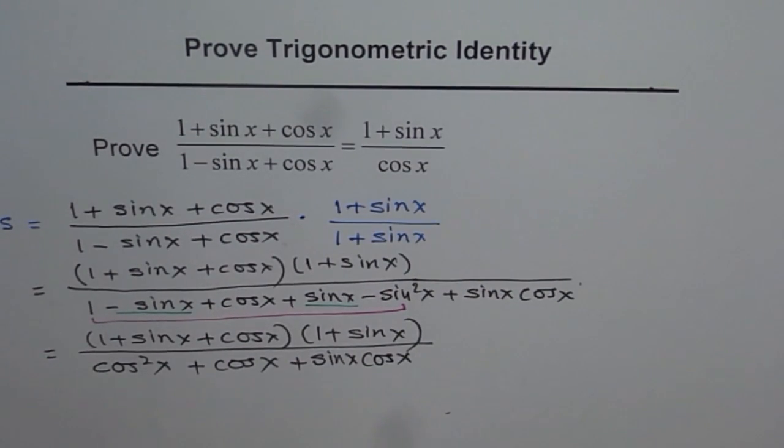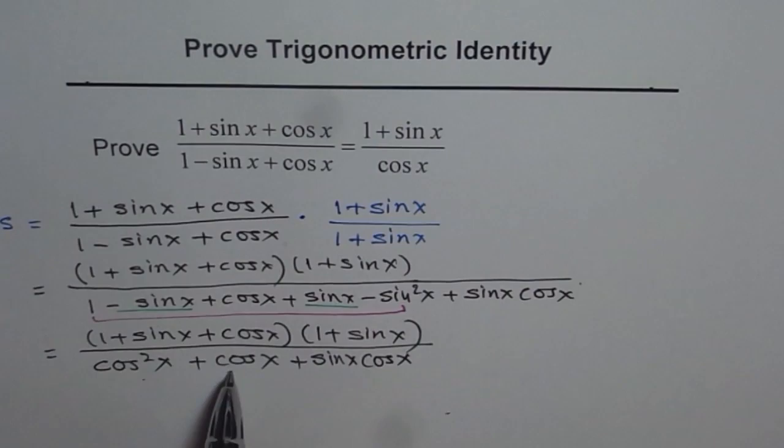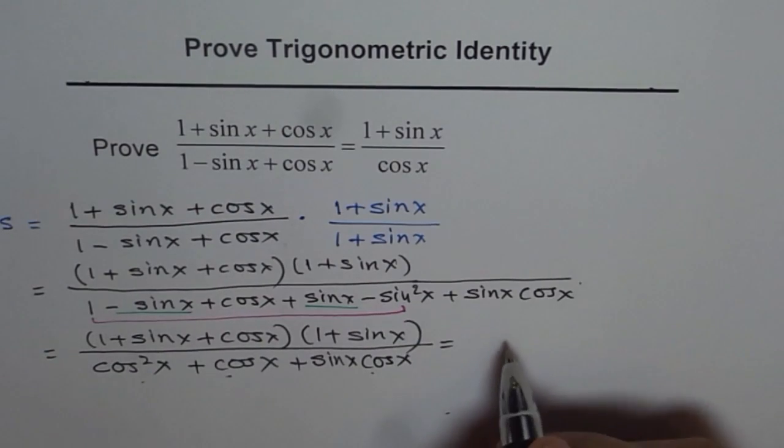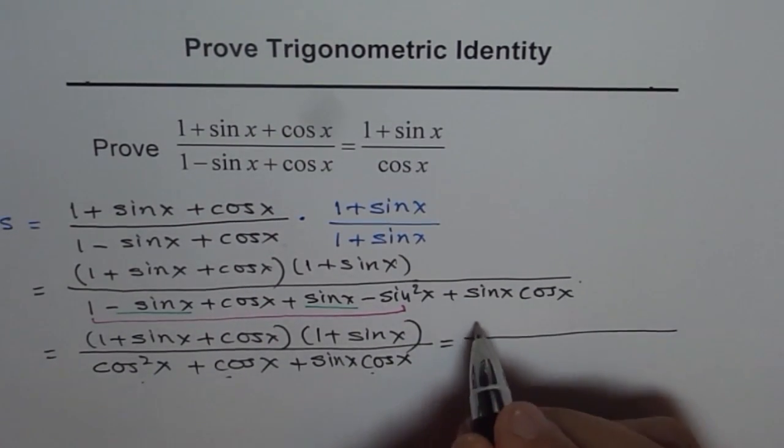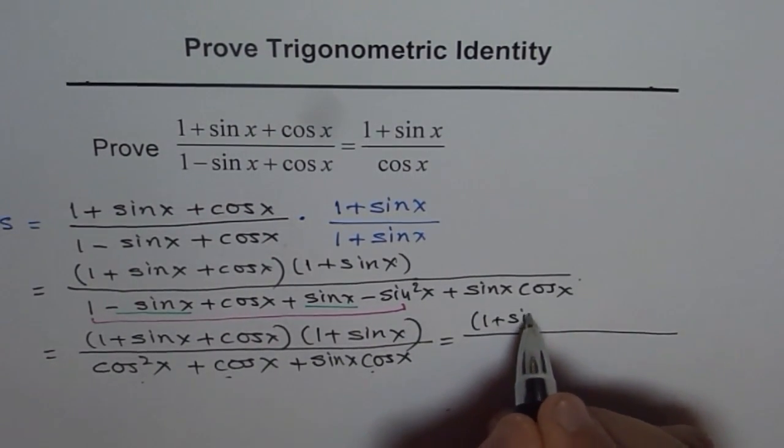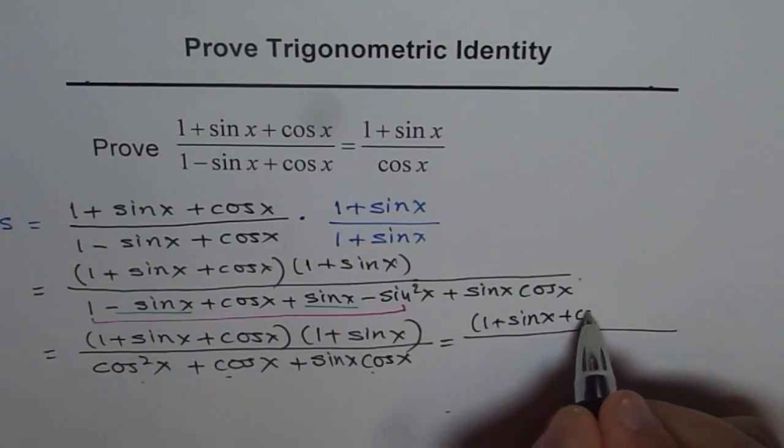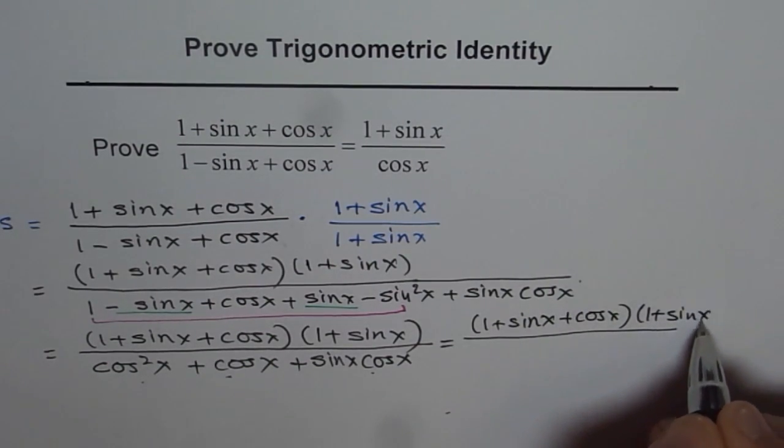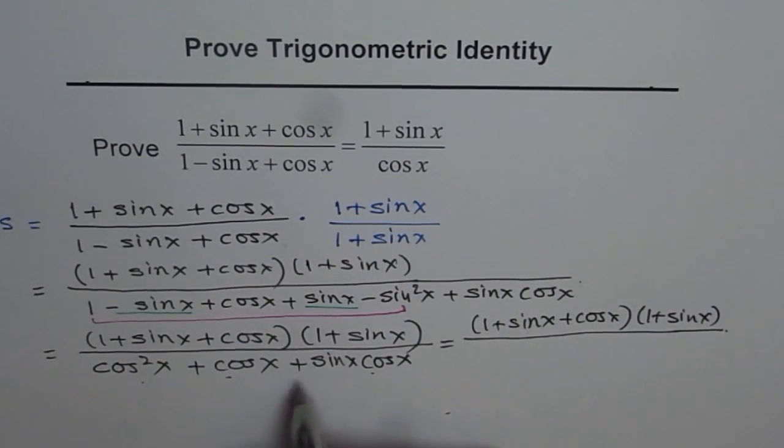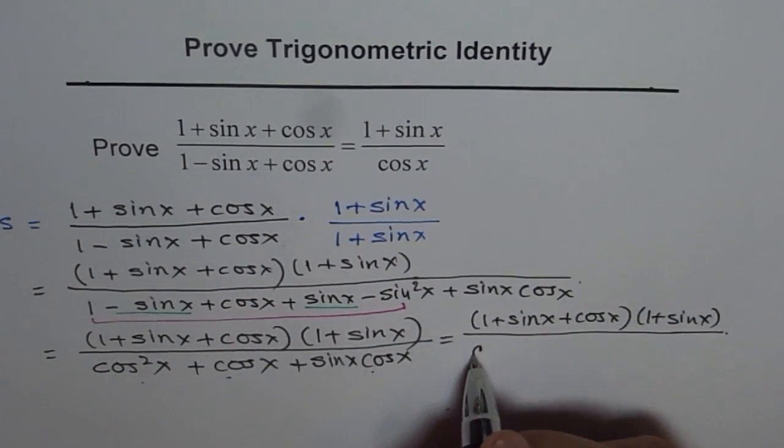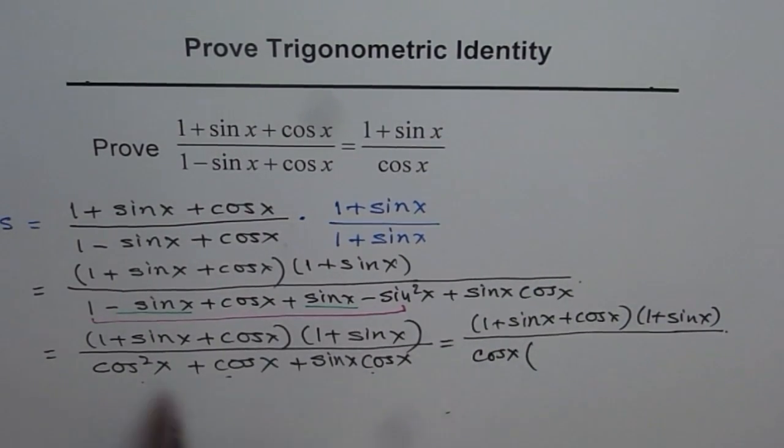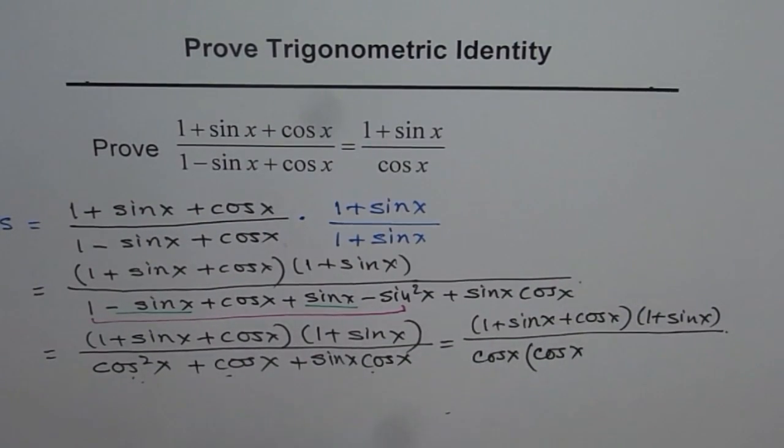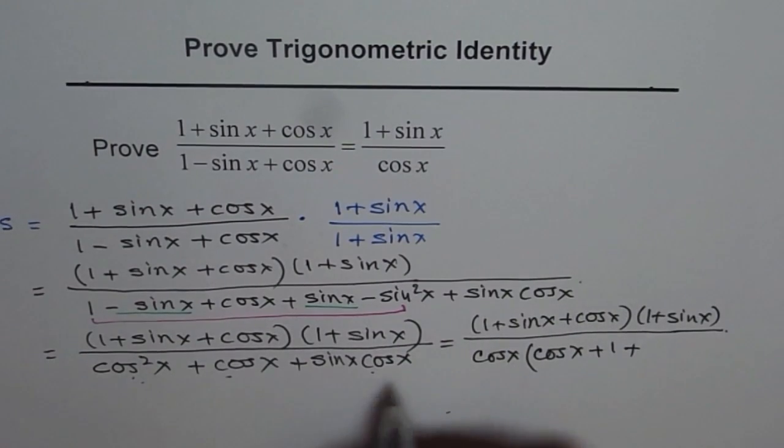Let me write this as (1 + sin x)(1 + sin x + cos x) in the numerator. In the denominator, I will take cos x as common. So you're left with cos x times (cos x + 1 + sin x).